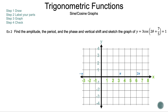Let's move on to example 2. Find the amplitude, the period, the phase shift, and the vertical shift, and sketch the graph of y is equal to 3 cosine of 2θ plus 7/5 plus 1. Using the given equation: a is 3, b is 2, c is 7/5, and d is 1.